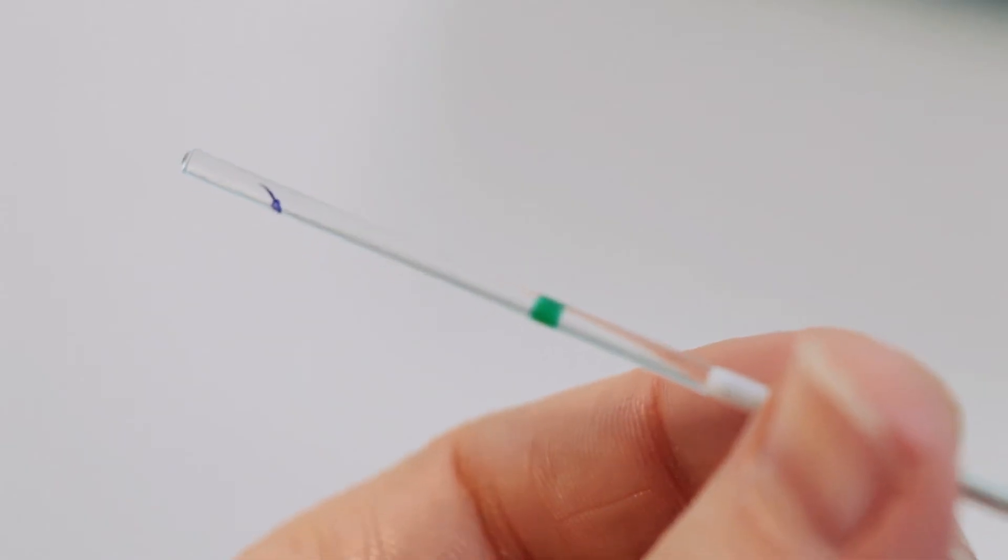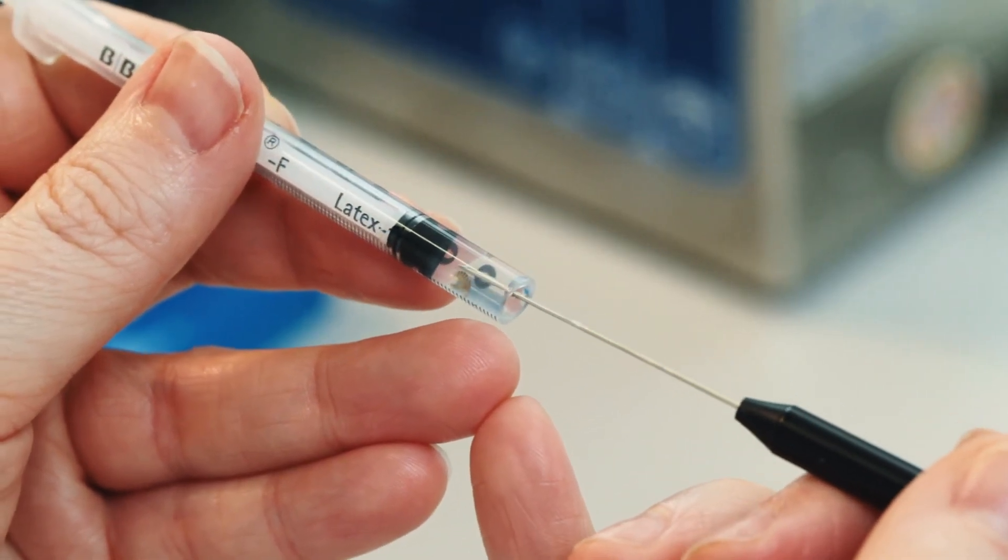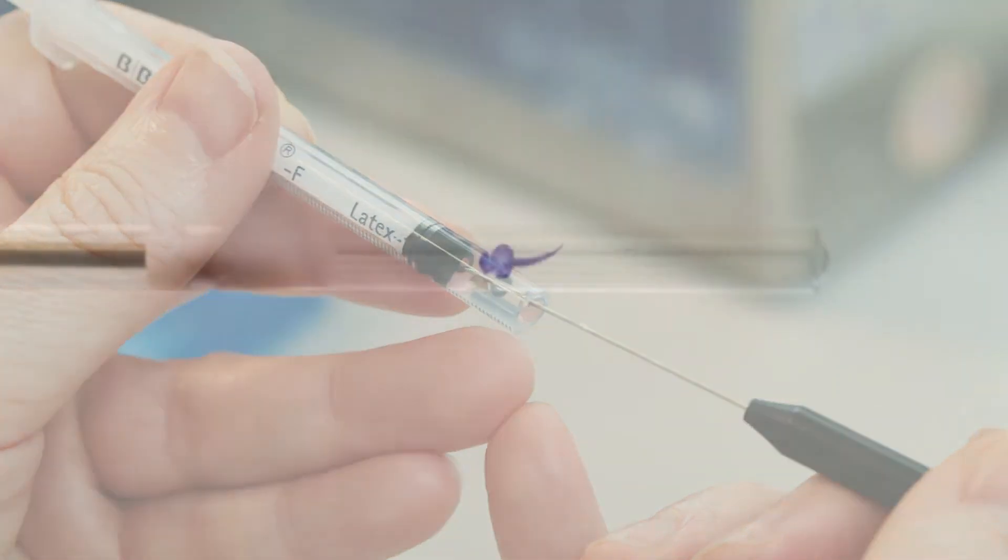Rotate the capillary to align your sample in the center of the cylinder. Finally, use a needle to position your specimen while the agarose hardens.